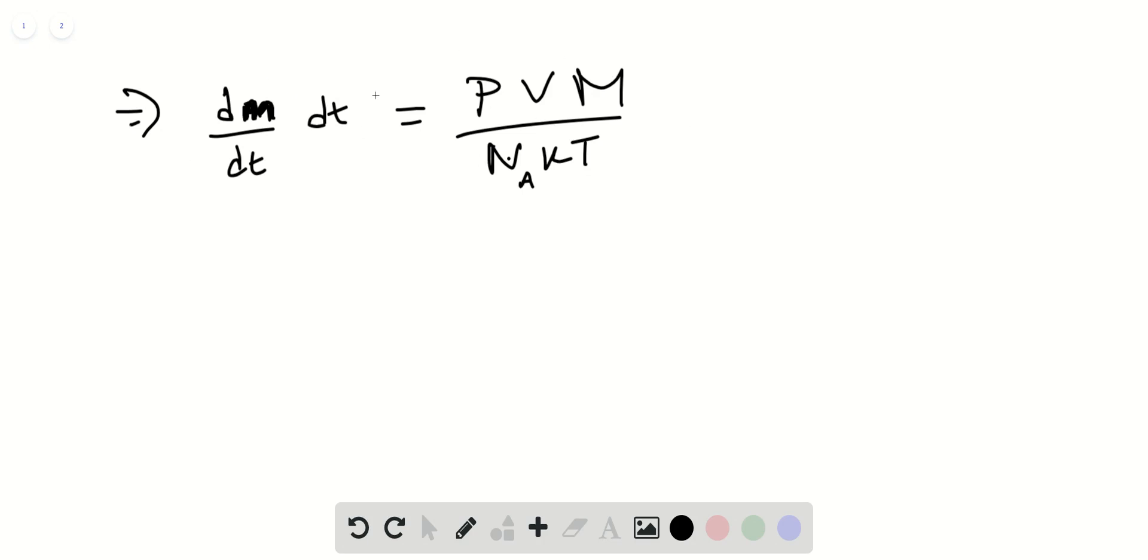You should check that the units work out on the left and right hand side, obviously, but they do. So let's use this now. So we want a new temperature T2 that gives the increased mass flow rate increased by 1.5 times. So what we have, this is part two, we have is that 1.5 times dm/dt times dt will be equal to 1.5 times PVm over nA KT1, that's the initial temperature.